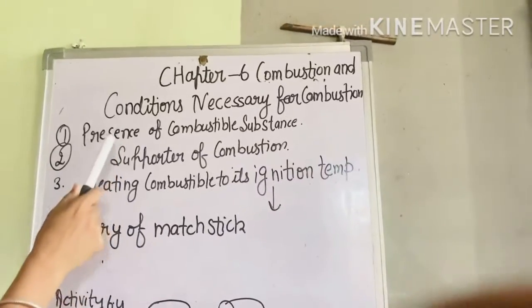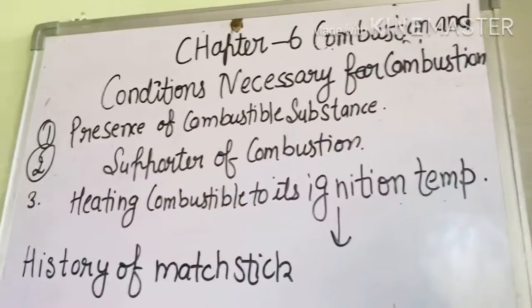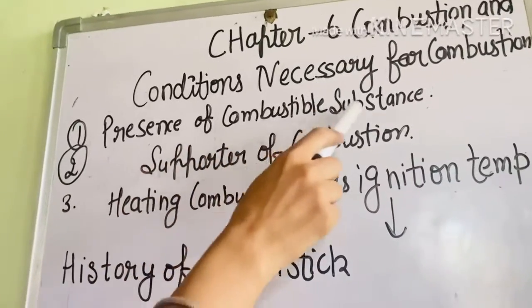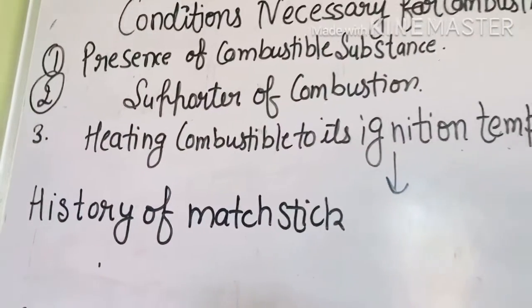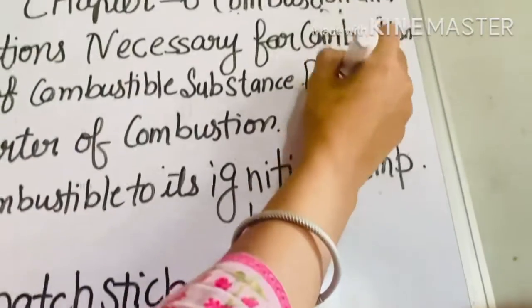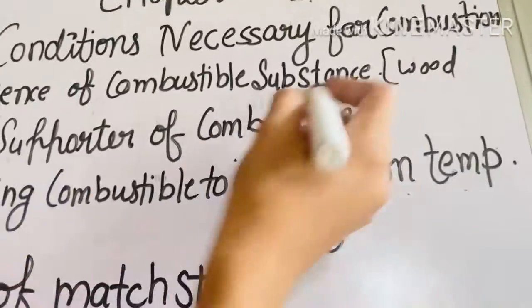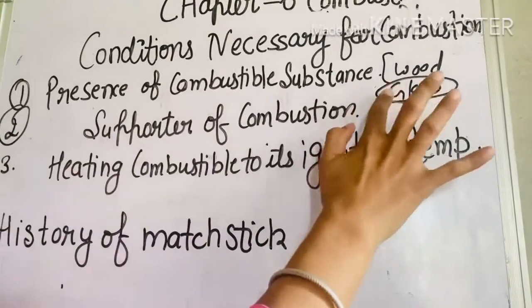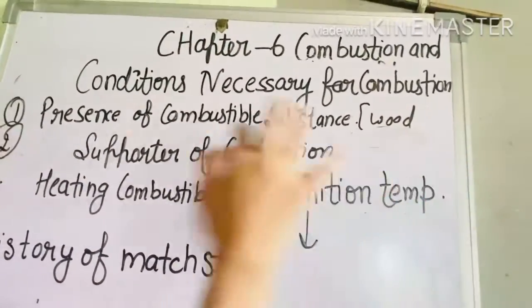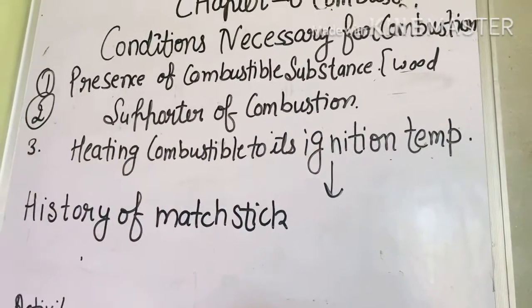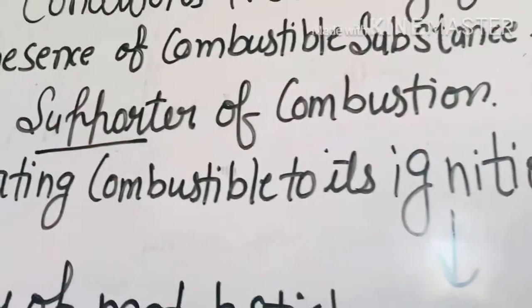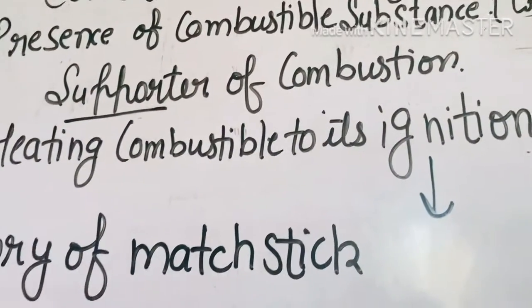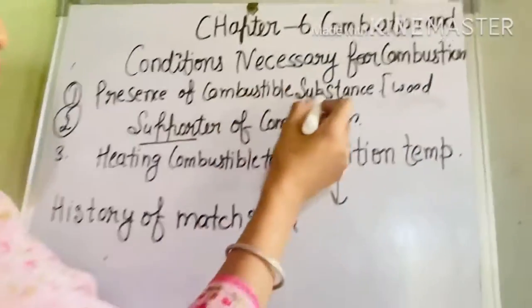The next topic is conditions necessary for combustion. First, the presence of a combustible substance. The substance needs to be able to burn. If you take wood, it is a combustible substance, but if you take glass, it will not burn. Second, the presence of air — combustion will not occur without air.